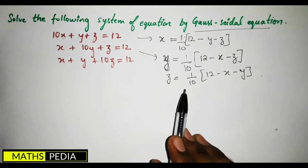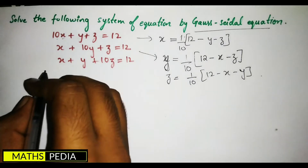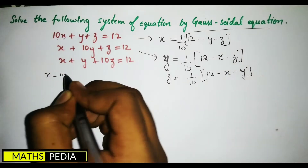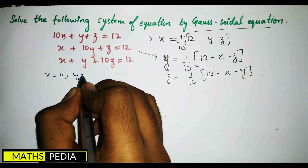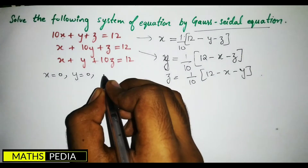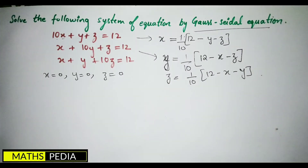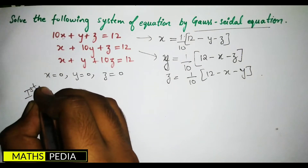This method is also called the iteration method, in which you start from trial solutions. You take x = 0, y = 0, and z = 0 as the initial values. I will now show you the first iteration. You have to do at least four iterations to converge to the answer.